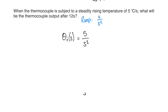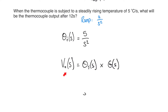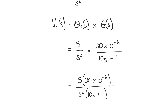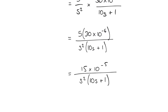We multiply the input by the transfer function to determine the output. So V_o(s), the output voltage in the s-domain, equals the input theta_i(s) multiplied by the transfer function G(s). The input is 5 over s squared, and the transfer function is 30 times 10 to the minus 6 over 10s plus 1. Multiplying numerators and denominators gives us 15 times 10 to the minus 5 over s squared times 10s plus 1.